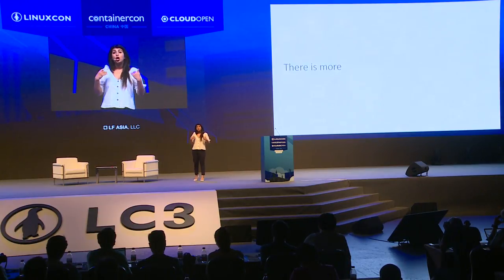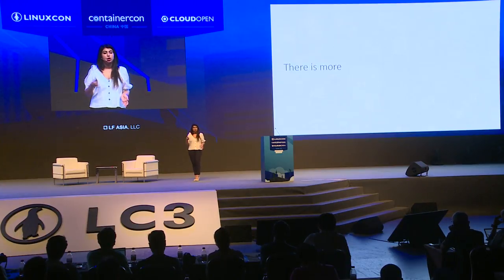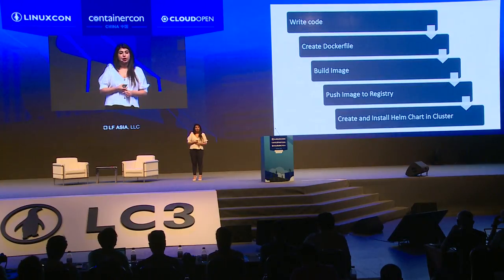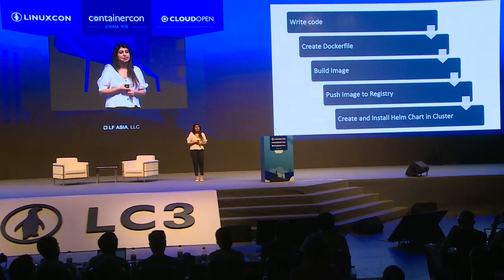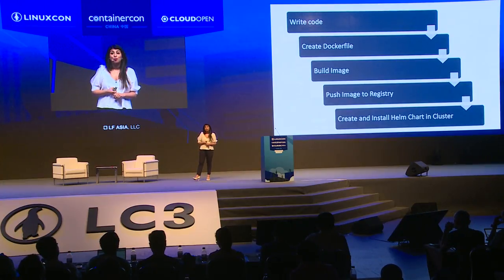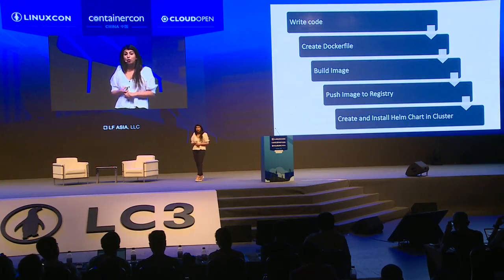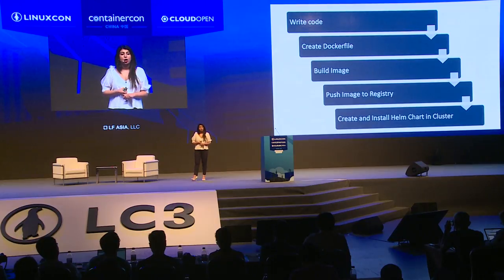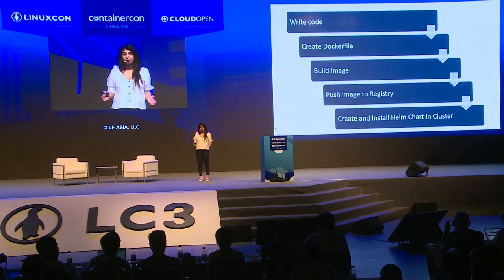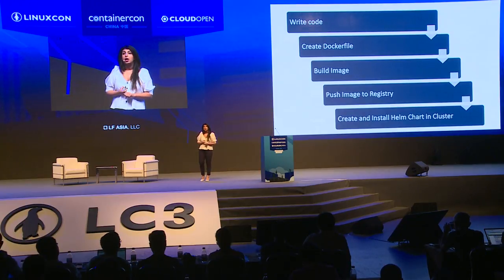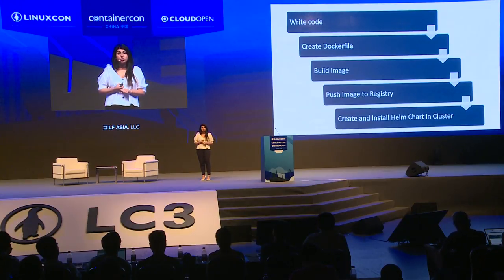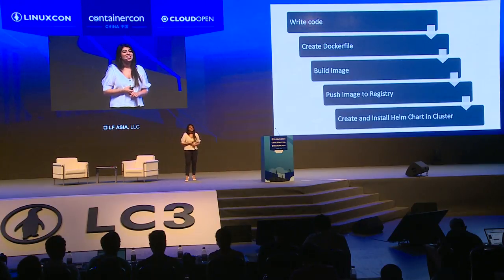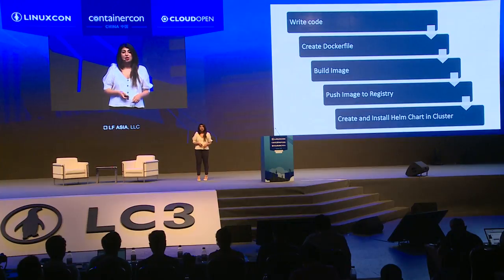Helm solved a big problem for our team in the process of developing applications that would run in Kubernetes, but we had some other challenges we wanted to focus on as well. One of the tools we started working on is called Draft. The idea is that when developing containerized applications, you may find yourself repeating the same steps over and over: writing a Dockerfile and doing a docker build, pushing that image to a container registry, writing a Helm chart or some Kubernetes configuration, referencing the image in that configuration, and then deploying your application to Kubernetes to test it out.